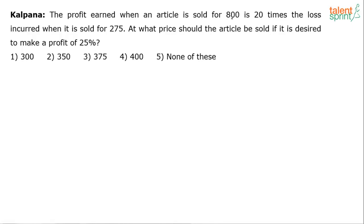There are two different selling prices here. The article is in one case sold for 800 rupees, in another case sold for 275. When you sell it for 800 rupees you make some profit. When you sell it for 275 you make some loss. The profit made is 20 times the loss.